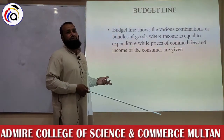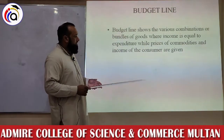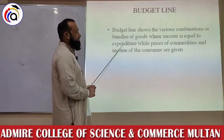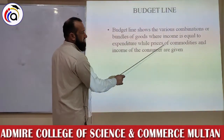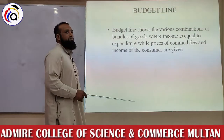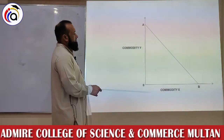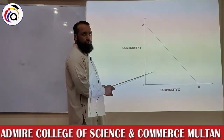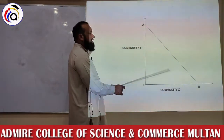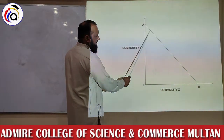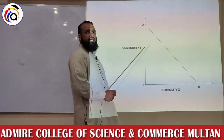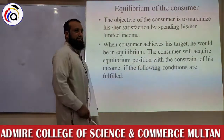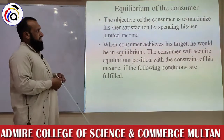The budget line: the consumer's income is his budget, and in the two goods model he spends it on both goods. The budget line shows the various combinations or bundles of two goods where income is equal to expenditure, while prices of commodities and income of the consumer are given. Any combination on line AB will exhaust the consumer's entire income, whether on commodity Y or commodity X. This is a negative slope line — more units of Y mean less expenditure on X, and vice versa — but the entire budget must be spent on this line.